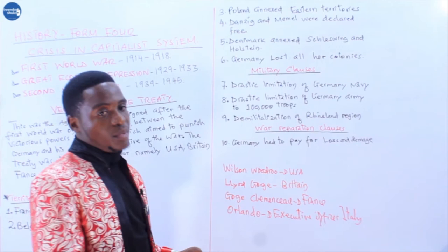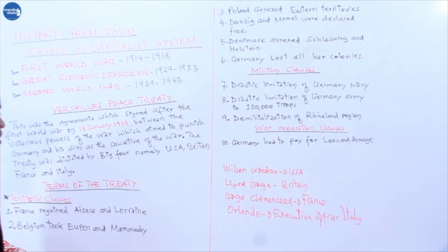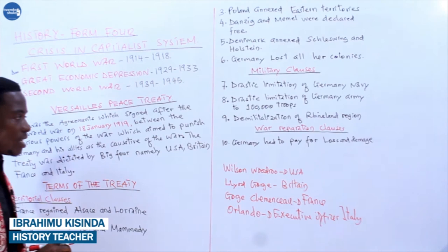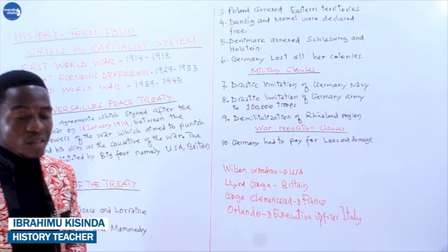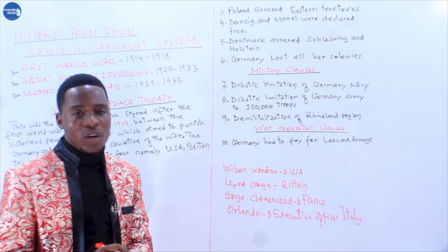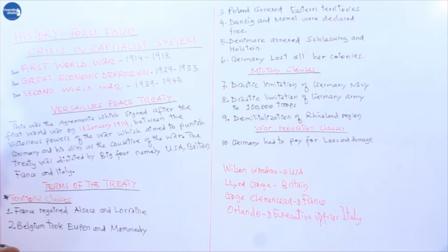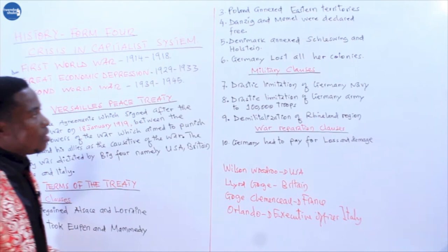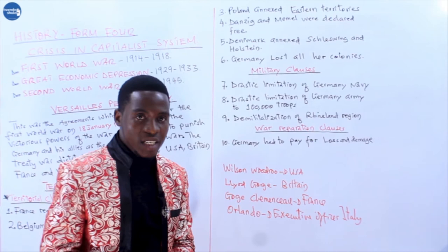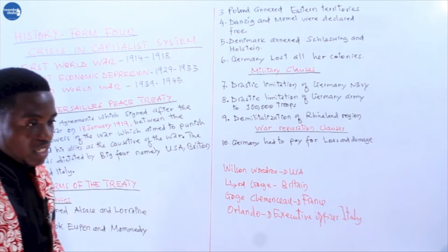They then discussed various issues during this Versailles Peace Treaty. What were the terms of the treaty? The aim was to punish Germany and its allies as the instigators of the war. Most of the terms were directed at Germany, because Germany was accused of being the main instigator. The terms of the Versailles Peace Treaty can be categorized into three categories: the territorial clause, the military clause, and the war reparation clause.